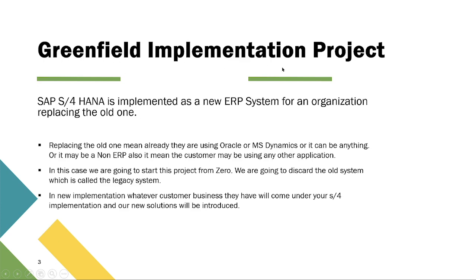Greenfield implementation project: SAP S4 HANA is implemented as a new ERP system for an organization, replacing the old one. Replacing the old one means they were already using Oracle, MS Dynamics, or any other application, or even a non-ERP system. In this case, we are going to start this project from zero.